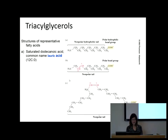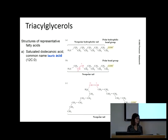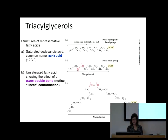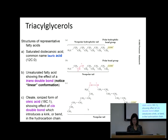When we name our fatty acids — I'm not going to require you to know this, but I want to introduce it — there's a formal name based on the length of the carbon chain. For example, dodecanoic acid: '-oic' is for carboxylic acid and 'dodec' stands for 12 carbons. Because systematic naming came after discovery, there's also a common name. People always use the common name. The trans version is linear and this is oleic acid, which has a kink.